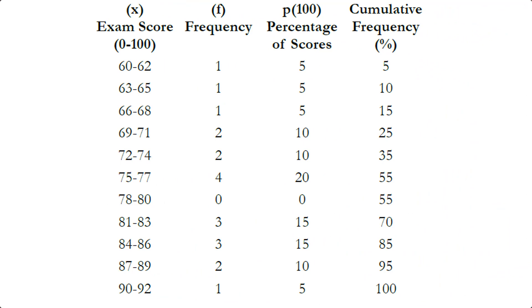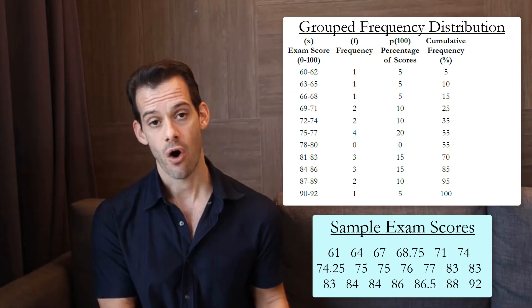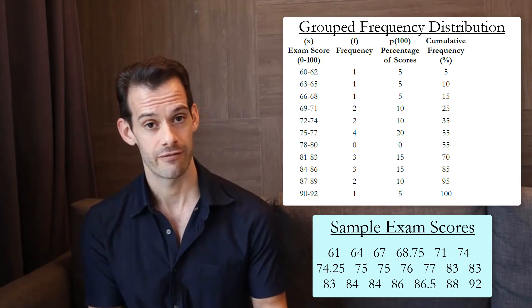And we can see this idea that a grouped frequency distribution table simplifies our data, makes it a little bit lower resolution. And we can see this if we try to find something like the mean. What we realize is we can no longer recreate the actual raw data because our scores have been grouped. And so we no longer know their individual values. All we can do now is estimate for the mean.